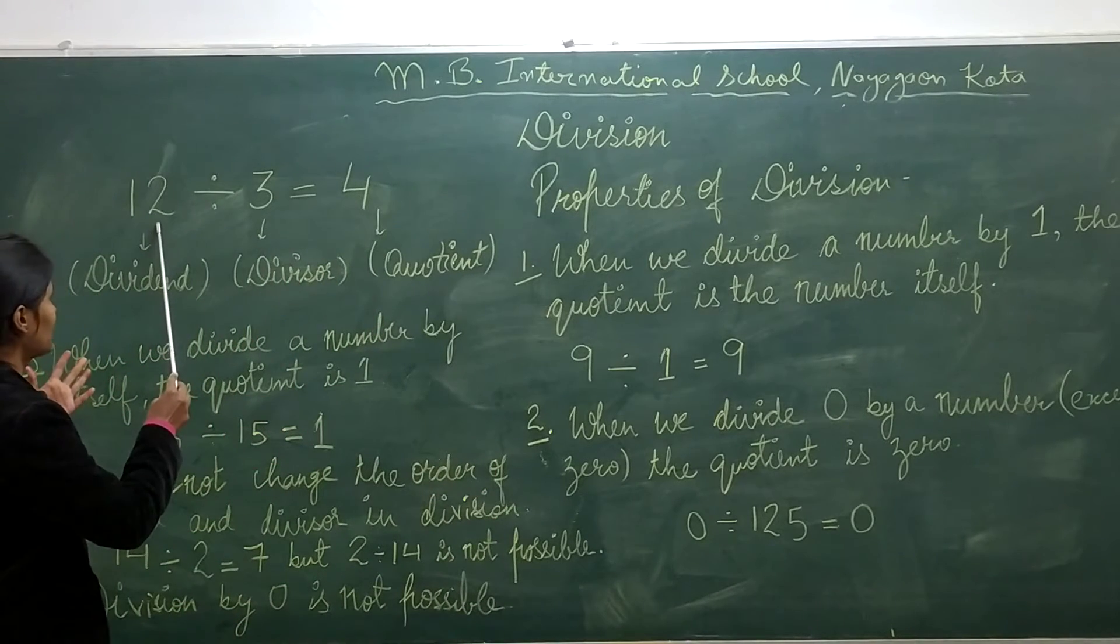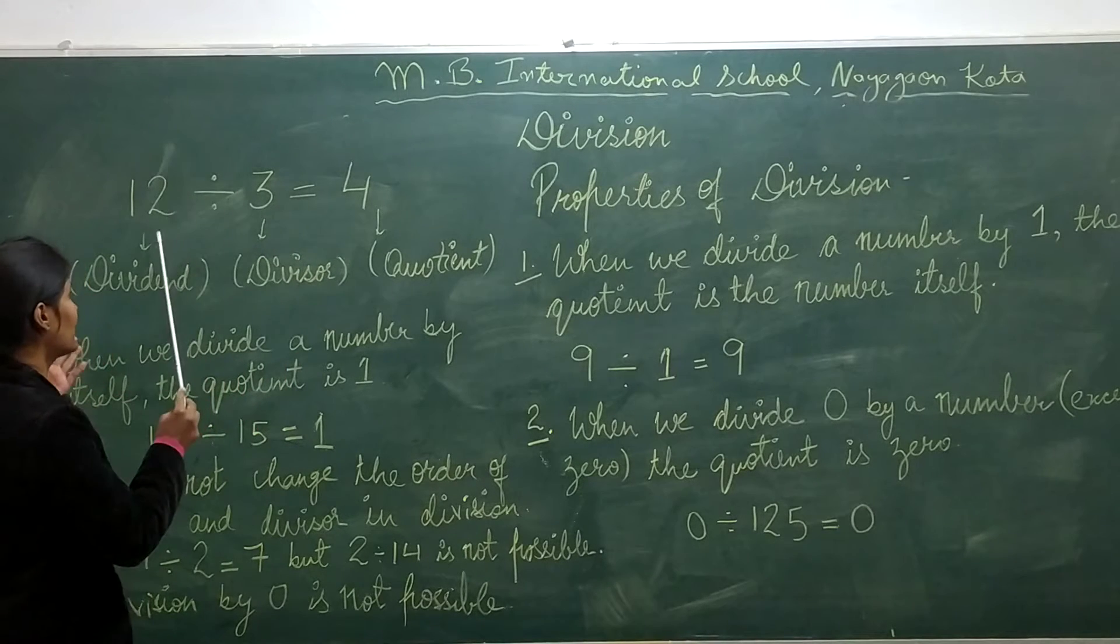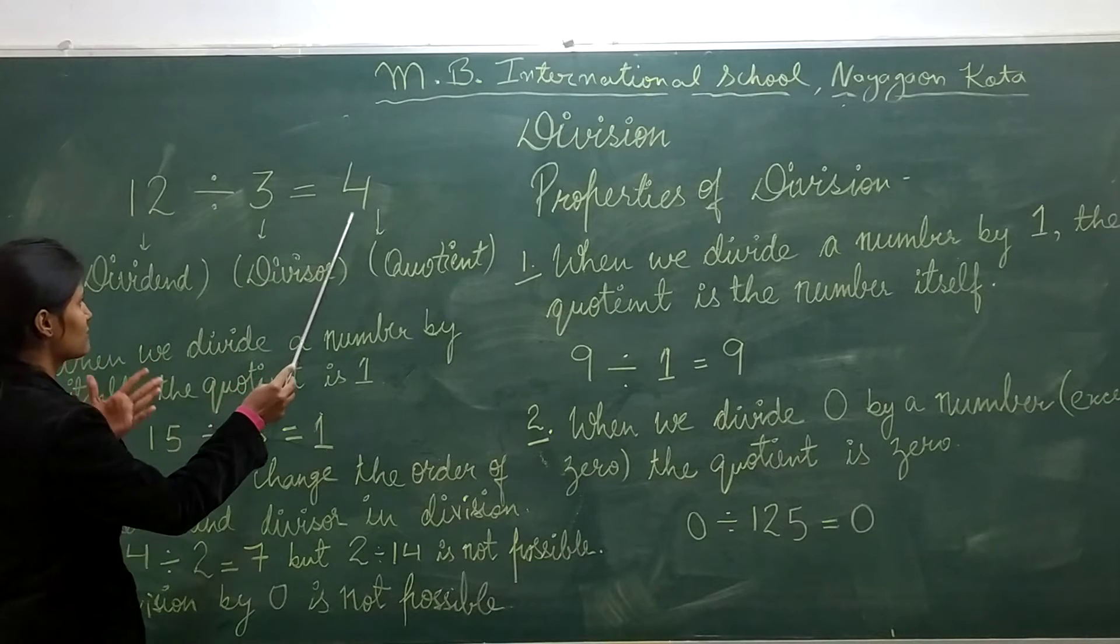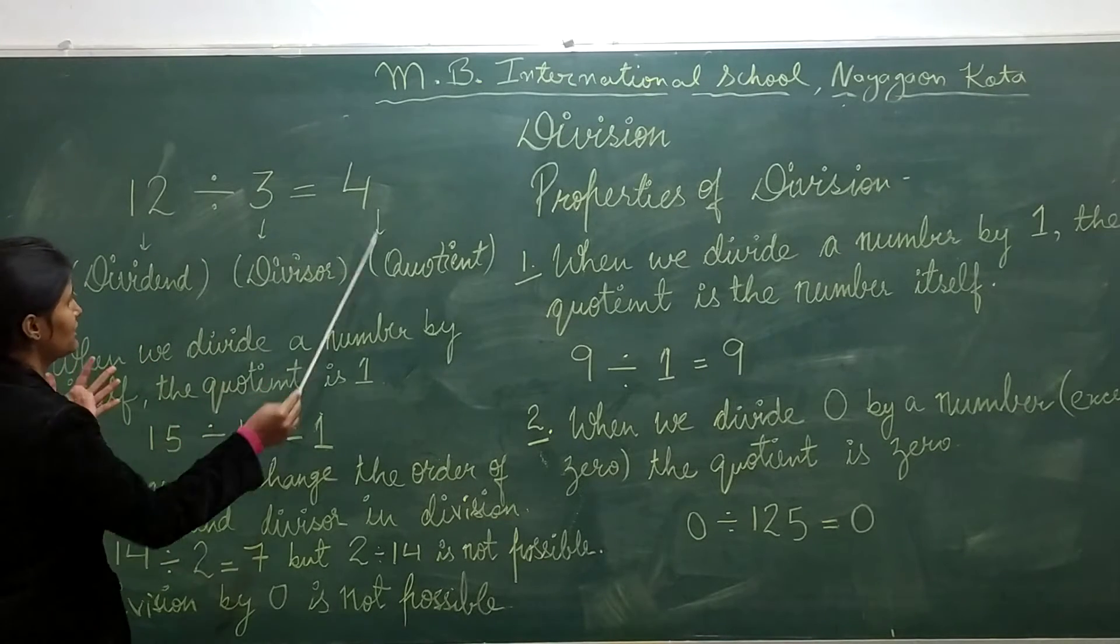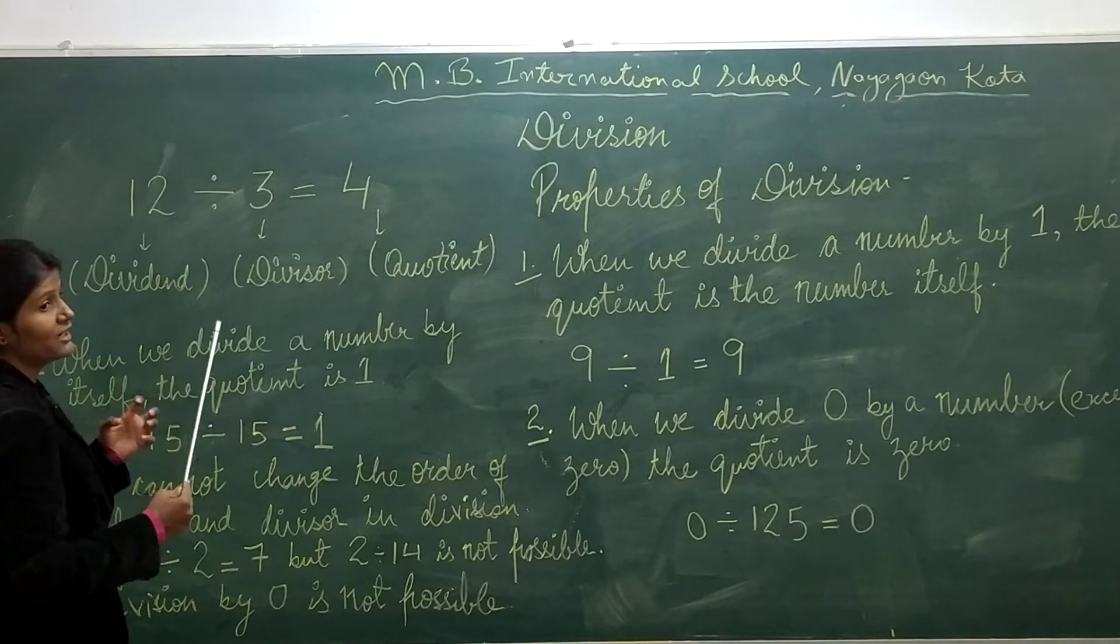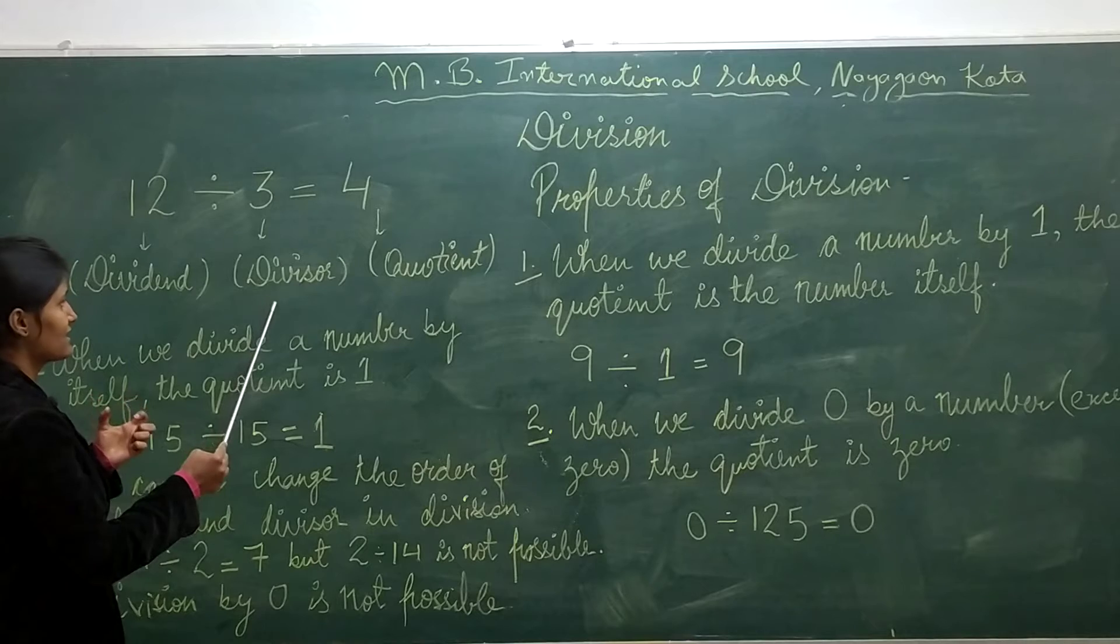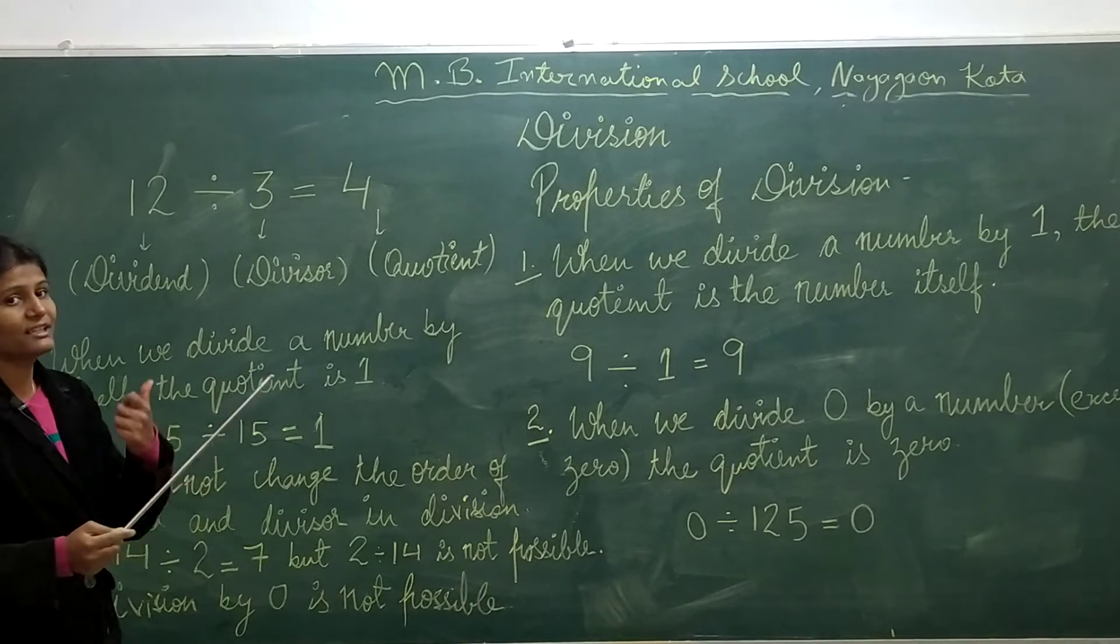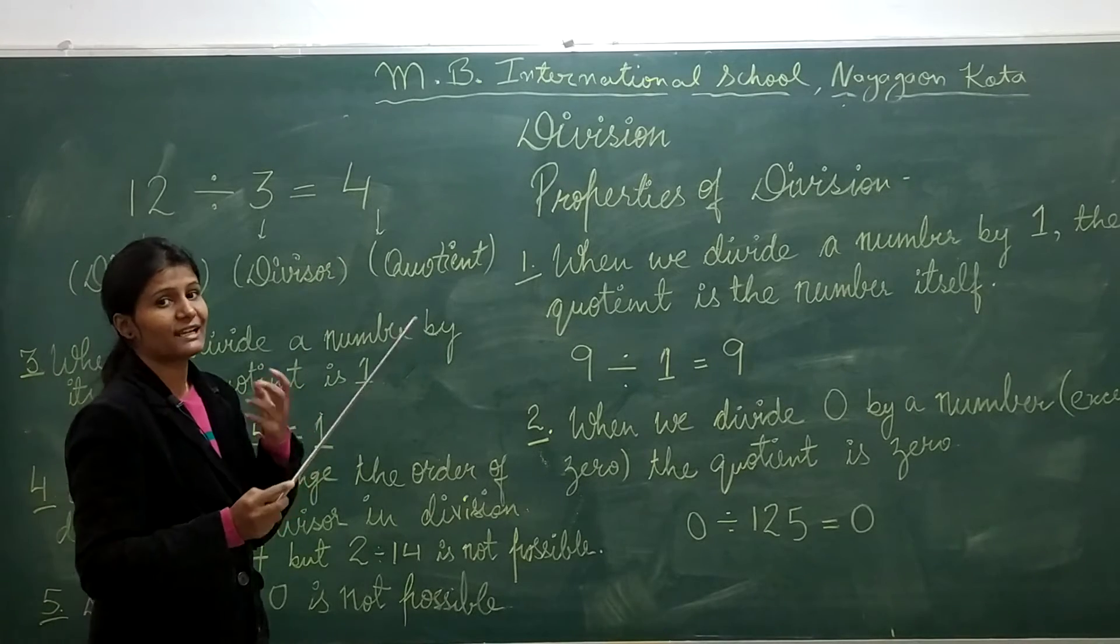For example, if we divide 12 by 3, we get the answer 4. Here 12 is the dividend, 3 is the divisor, and 4 is the quotient. The dividend is the number that we have to divide. The divisor is the number that divides. And the quotient is the answer we get.